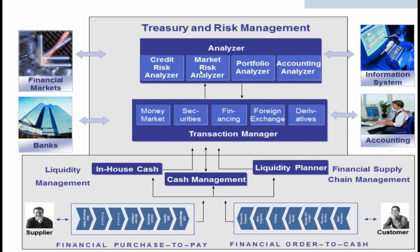The credit risk analyzer focuses on measuring, analyzing, and controlling country and counterparty default risks. The first phase aims to cover the specific risks associated with financial transactions in a company. The credit risk analyzer enables us to control risks actively by setting limits. This is supported by flexible limit management functions with online monitoring as well as extensive reporting options, allowing managers to identify credit risks as they occur and take evasive action.